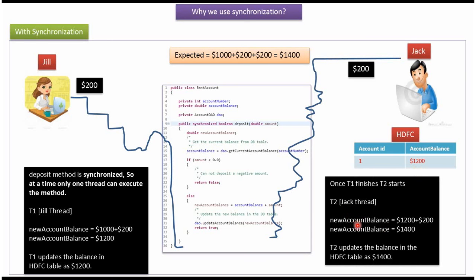Jack's thread calculates the new account balance. Current account balance is $1200, and Jack wants to transfer $200, so new account balance will be $1400. Jack's thread updates the new account balance of $1400 in the HDFC table. So the final account balance will be $1400, which matches the expected result. So using synchronization, we can avoid race condition and we can avoid the inconsistency problem.